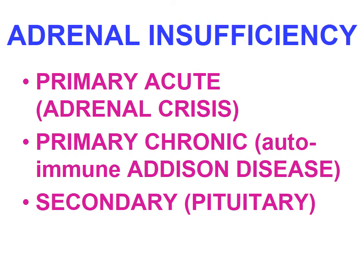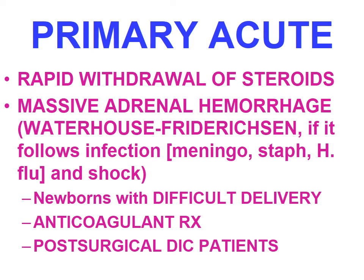Adrenal insufficiency can occur either acute or chronic, as primary loss of adrenal function or secondary to diminished ACTH production. Primary acute adrenal crisis is a sudden increase in glucocorticoid requirements in a patient with chronic insufficiency. Primary chronic is autoimmune — Addison's disease. Secondary could be due to a pituitary tumor or pituitary adenoma resulting in adrenal insufficiency. Primary acute adrenal insufficiency could be due to rapid withdrawal of steroids or failure to increase the steroid dose in periods of stress.